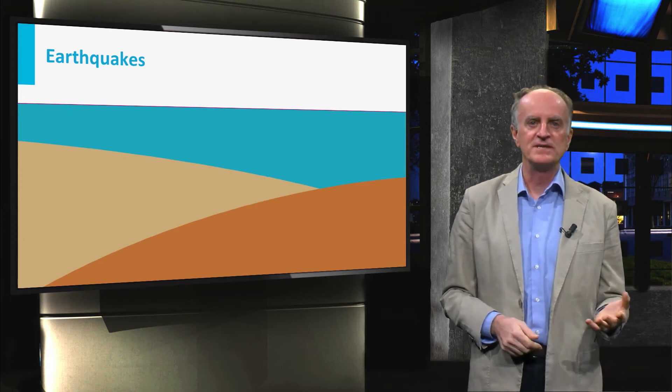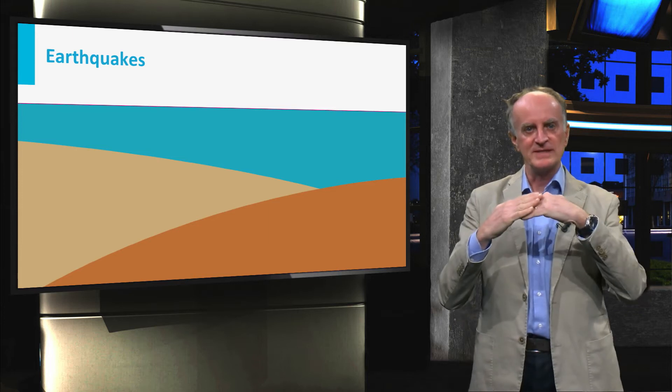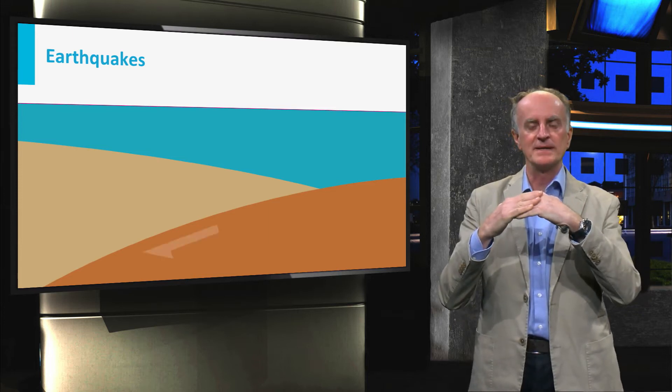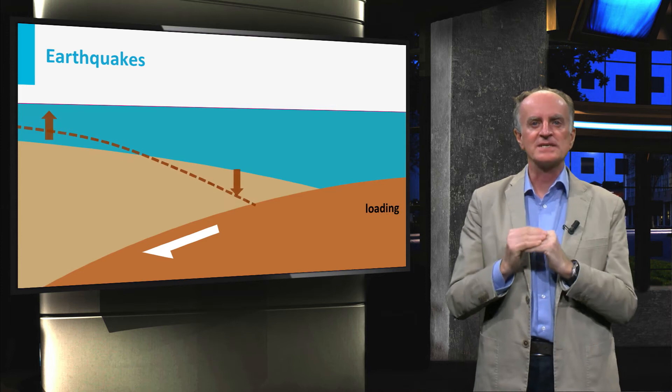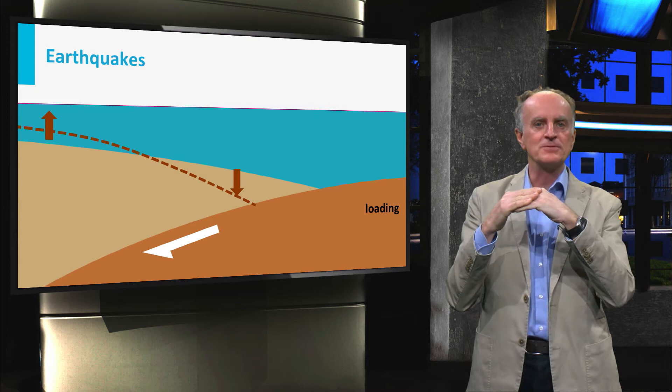Earthquakes are a constant feature of subduction zones. They are mainly caused by the friction between the subducting and the overlying plate. In an initial stage, called the loading stage, static friction prevents slip between the two plates.